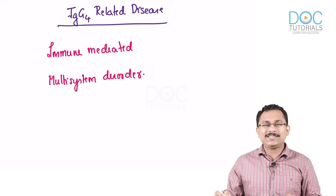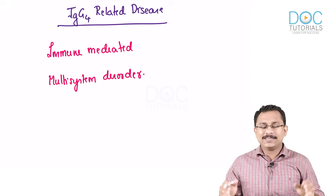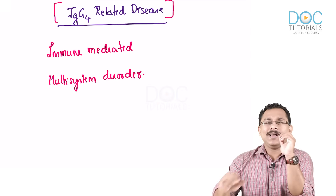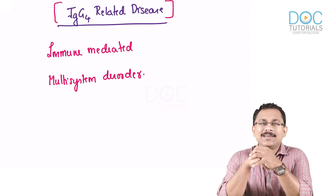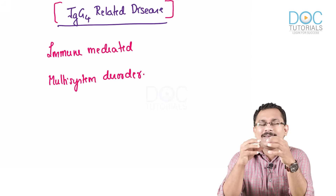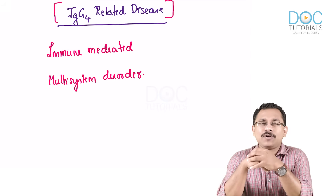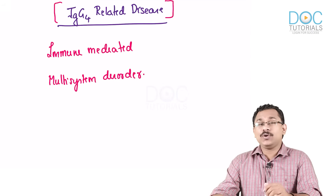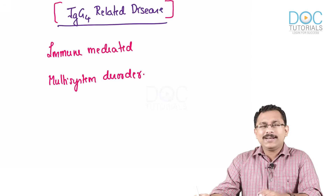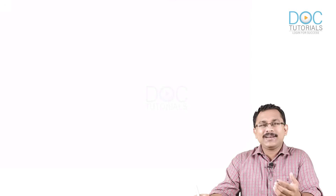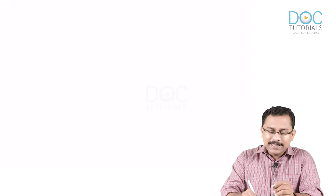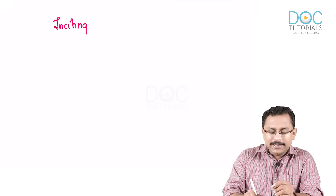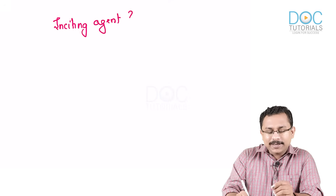What is IgG4-related disease? This term is actually an umbrella term for several disorders which have in common the finding that they are related to IgG4 production by the plasma cells. Why does this disorder result? What is the triggering factor? It is still unknown.